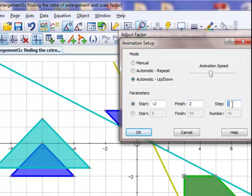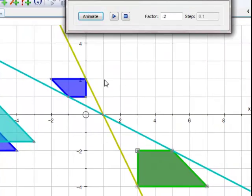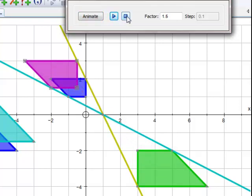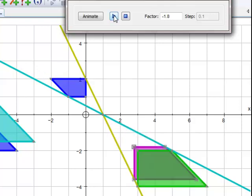And play. There we have it. You can pause at any time and have a discussion. What about the area? When the scale factor was two, the area of the image is four times bigger. We square the scale factor. Even if it's negative two, it's also four times bigger.